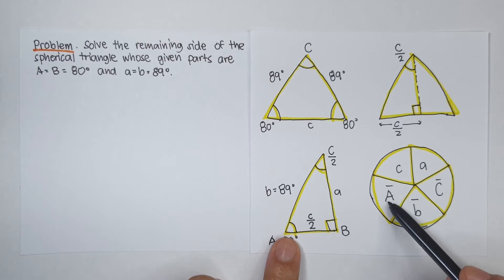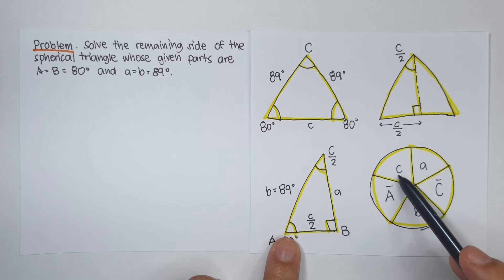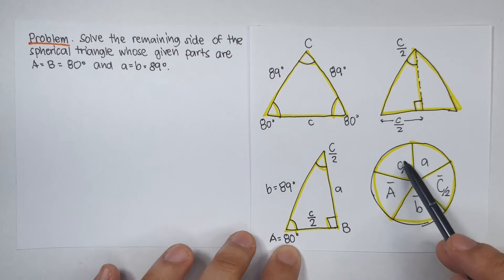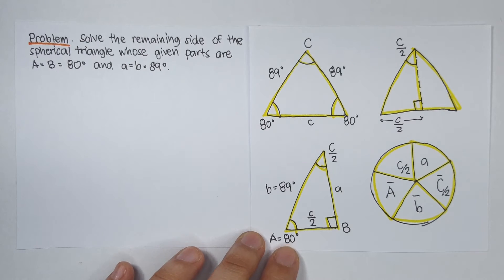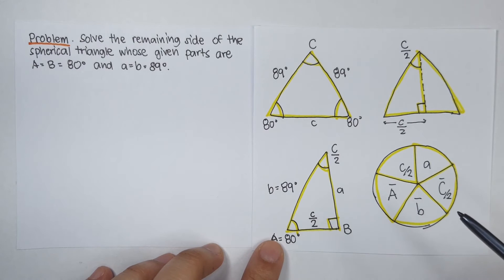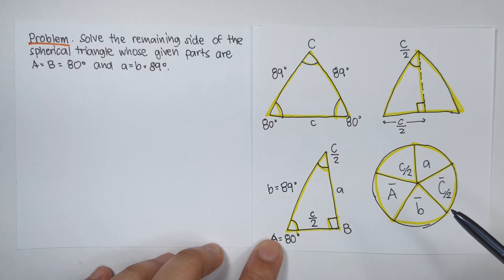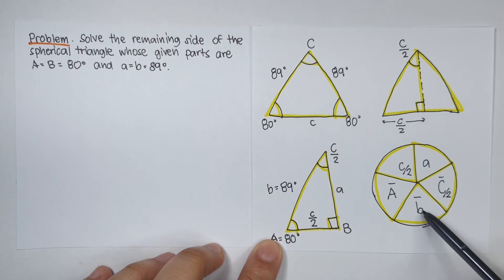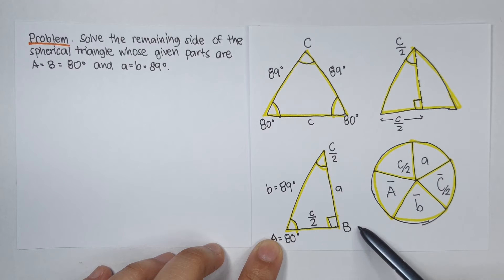Then A bar, C bar, then A, C, A, C. This is rather C over 2 since this is C over 2. So, this is our revised Napier's circle. So, I hope you don't get confused with our Napier's circle. The main point is that we let this as B bar because angle B is our 90 degree angle. Okay?